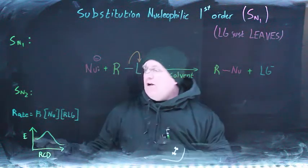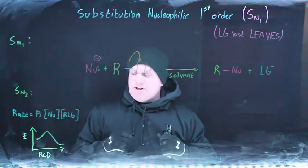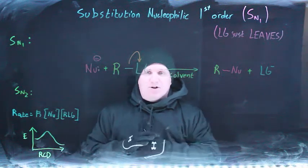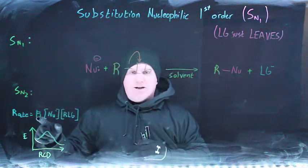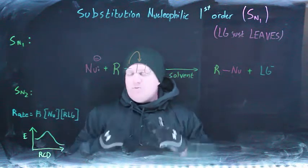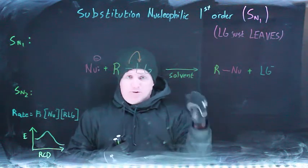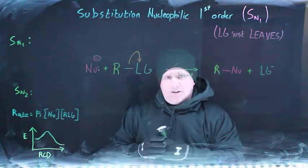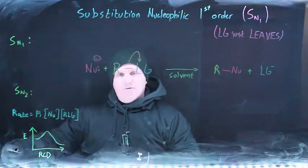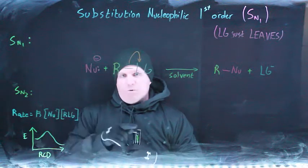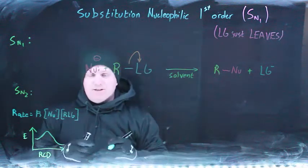In an SN2 mechanism, because the collision in the slow step involves both the nucleophile and substrate with the leaving group, the rate depends on the rate constant times the concentration of the nucleophile times the concentration of the substrate with the leaving group. More of either means a faster reaction. Because the nucleophile attacks simultaneously with the leaving group leaving, the reaction coordinate diagram for SN2 is one single hump — one transition state and no pauses.